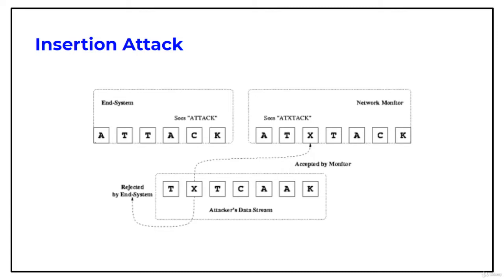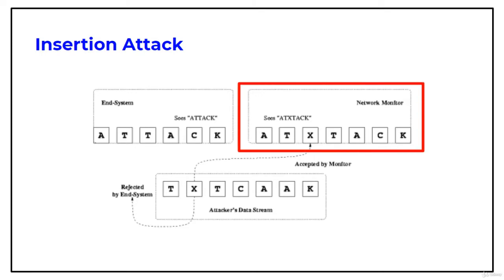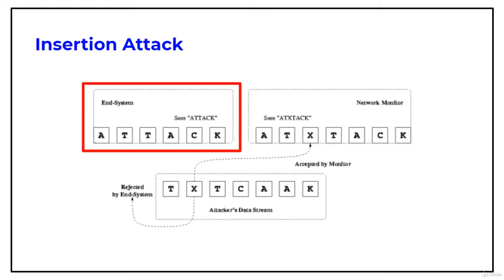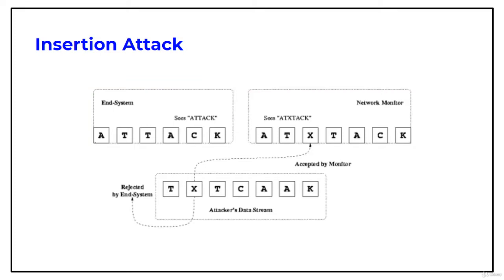The attacker obscures extra traffic and the IDS concludes the traffic is harmless, so the IDS gets more packets than the destination. For example, the attacker's data stream is 'txt caak', but the network monitor sees it as 'txt ck'. At the end system, after dropping the invalid packets, the result is 'attack'. This is how insertion attacks are carried out.